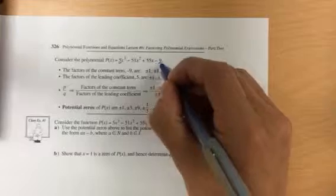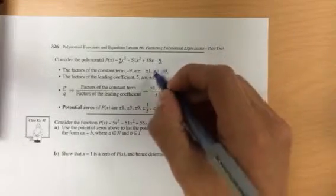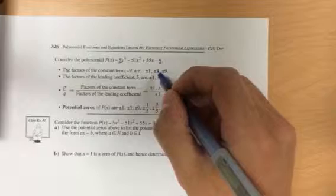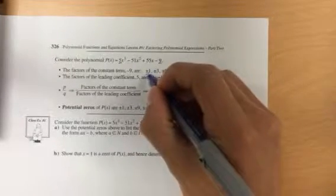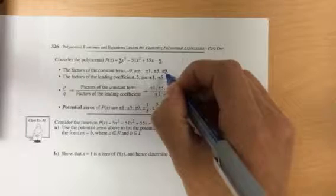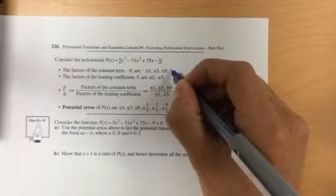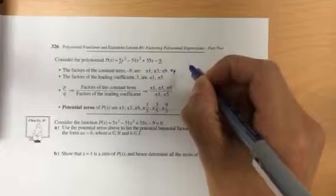Now, all we do is we take our constant term first, so negative 9, and we factor that. And when we factor that, we just look for the factors that go into negative 9, so plus or minus 1, plus or minus 3, plus or minus 9.